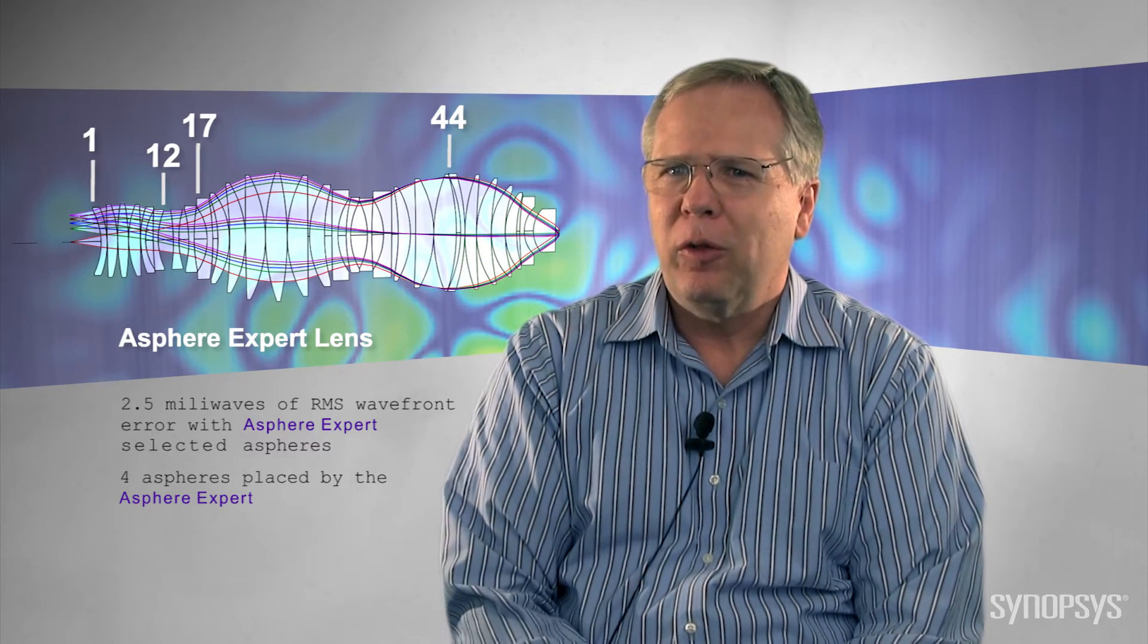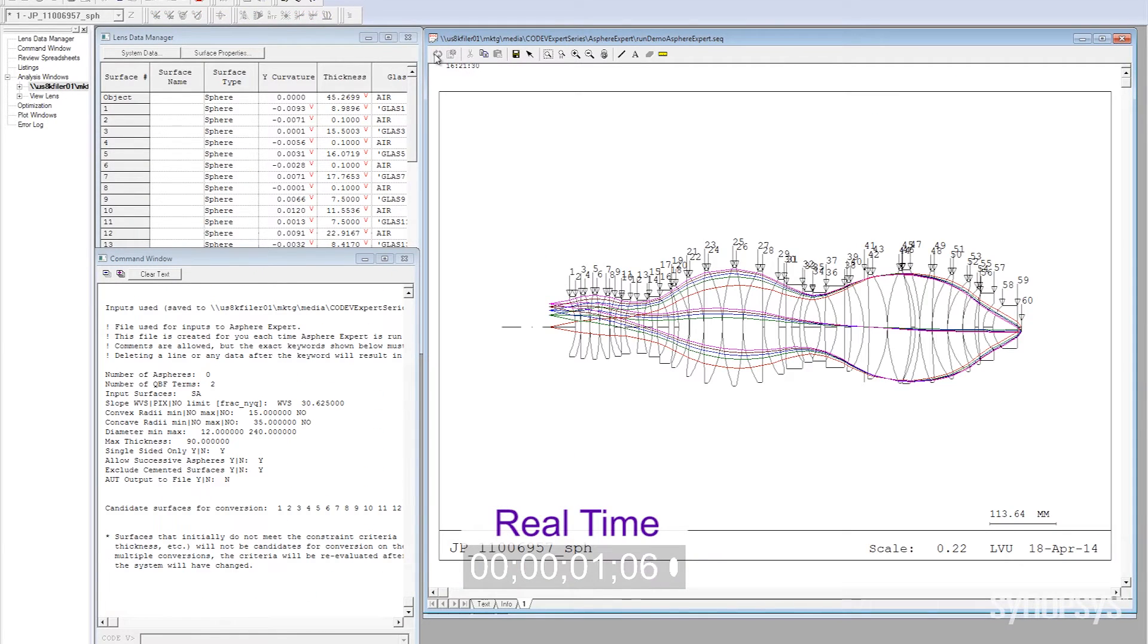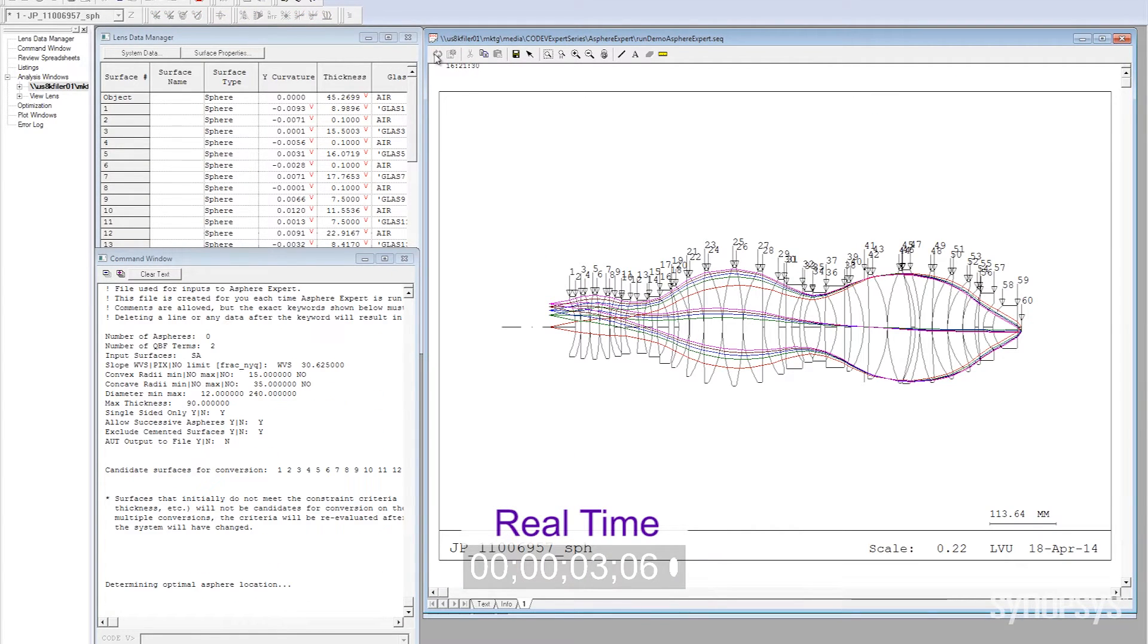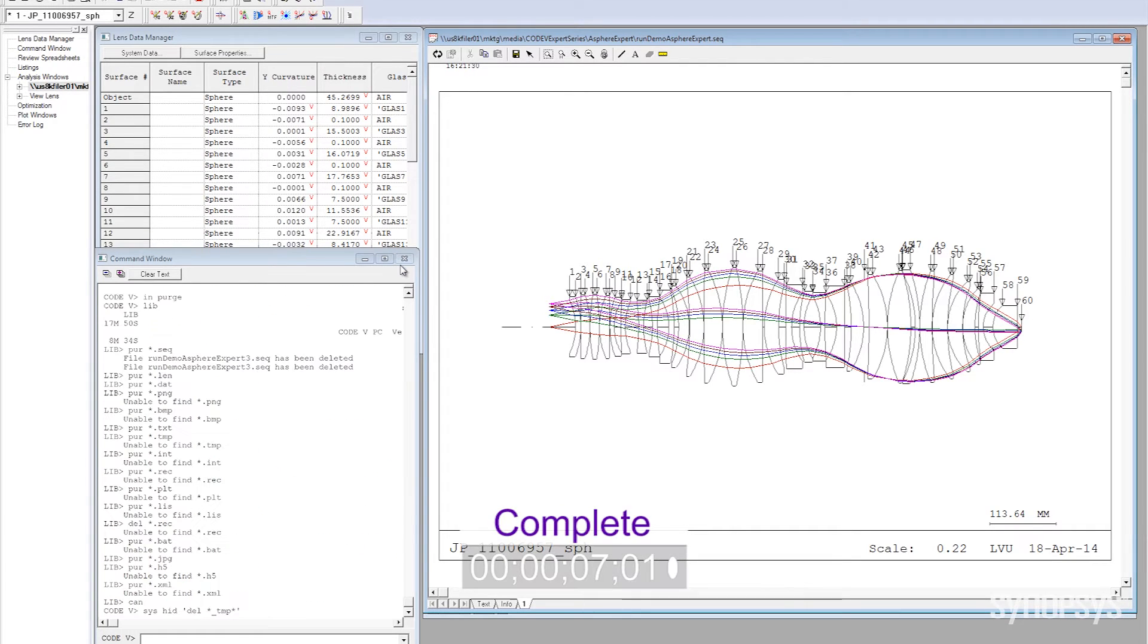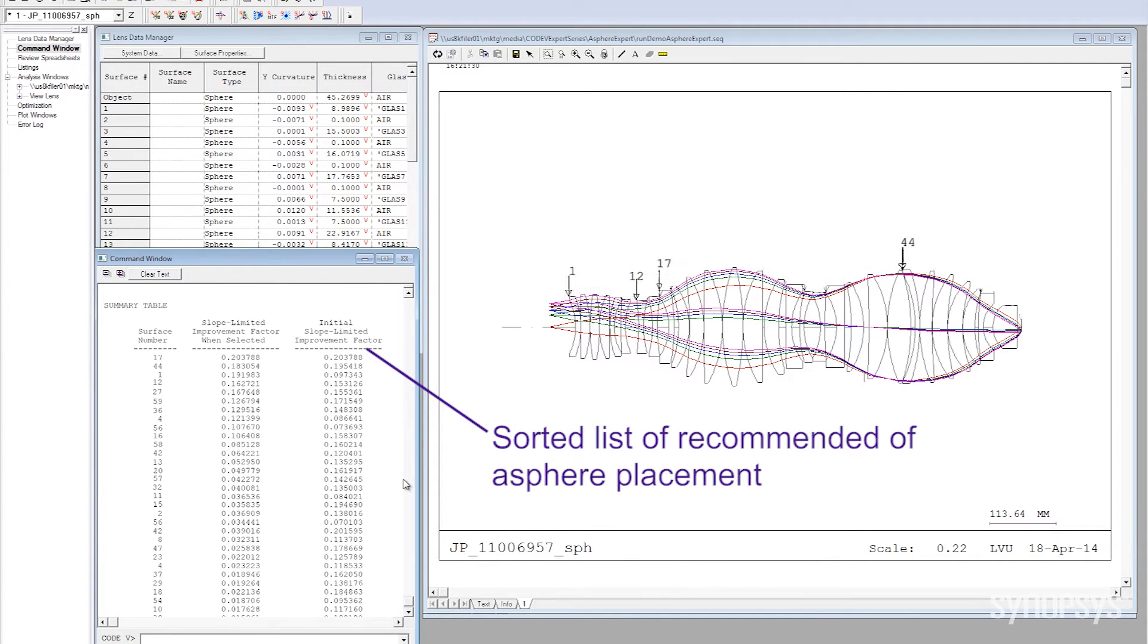And in the paper we show that we're actually able to get better performance than the nominal patent design. It's really pretty simple for a user to use the Asphere Expert. Asphere Expert will analyze all of the surfaces in the lens, it will then rank the surfaces, and it will place an asphere at the best surface.